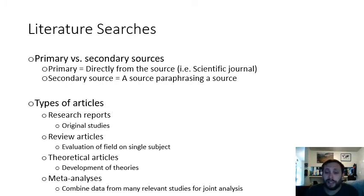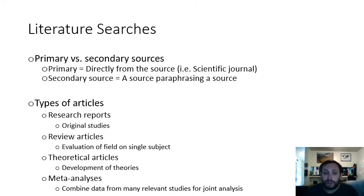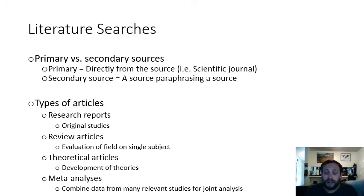Some types of articles really considered primary articles are research reports — original studies that take some sort of information and actually do a study using empirical evidence. There are also review articles, which are an evaluation of a field on a single subject — a very in-depth review of the literature in a certain content area. Additionally, there are theoretical articles in which there's a development of theories.